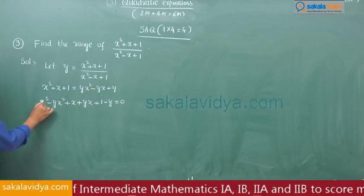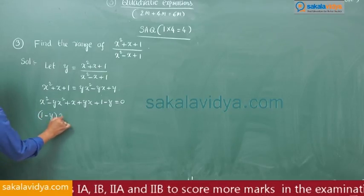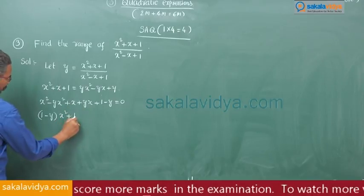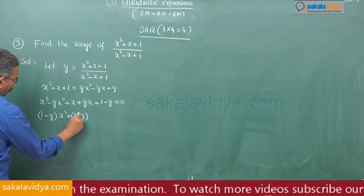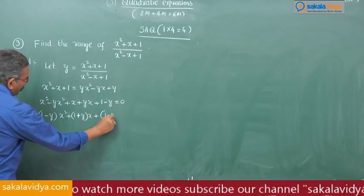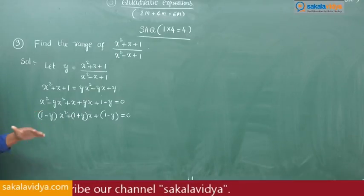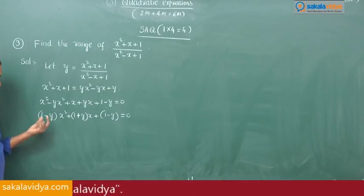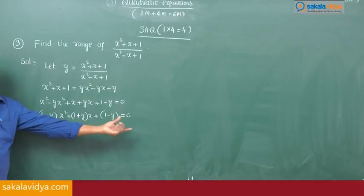Taking x² common and x common, we get (1 - y)x² + (1 + y)x + (1 - y) = 0. This appears to be in the form ax² + bx + c = 0.